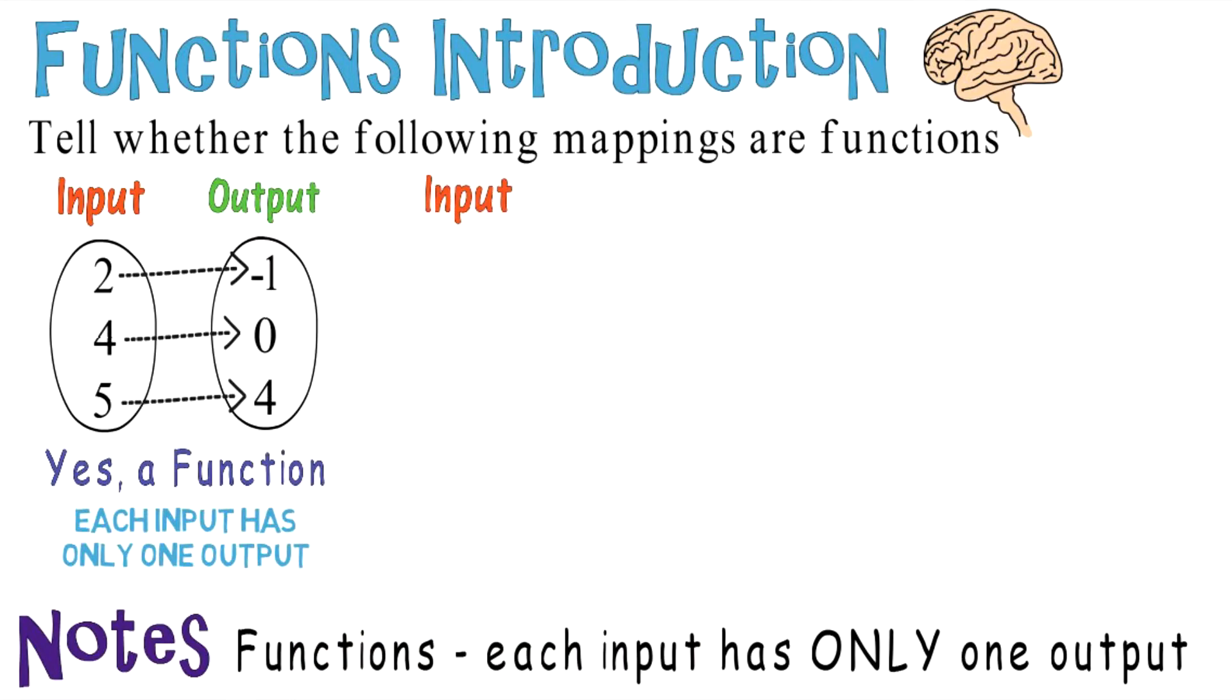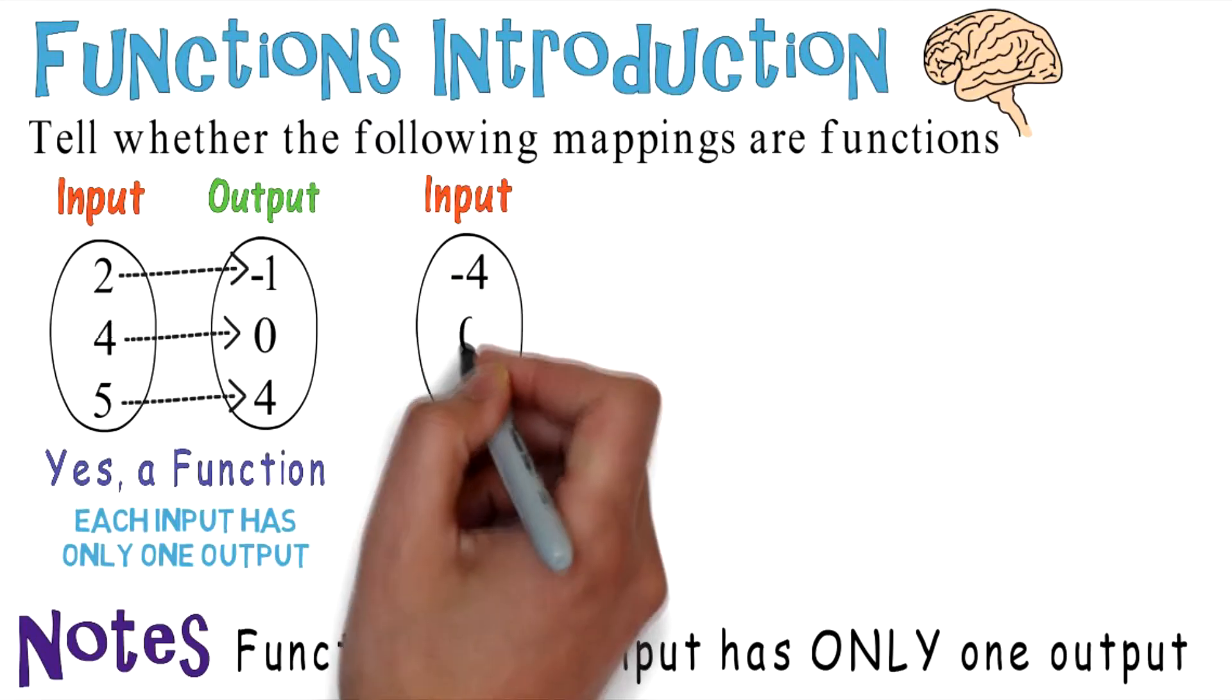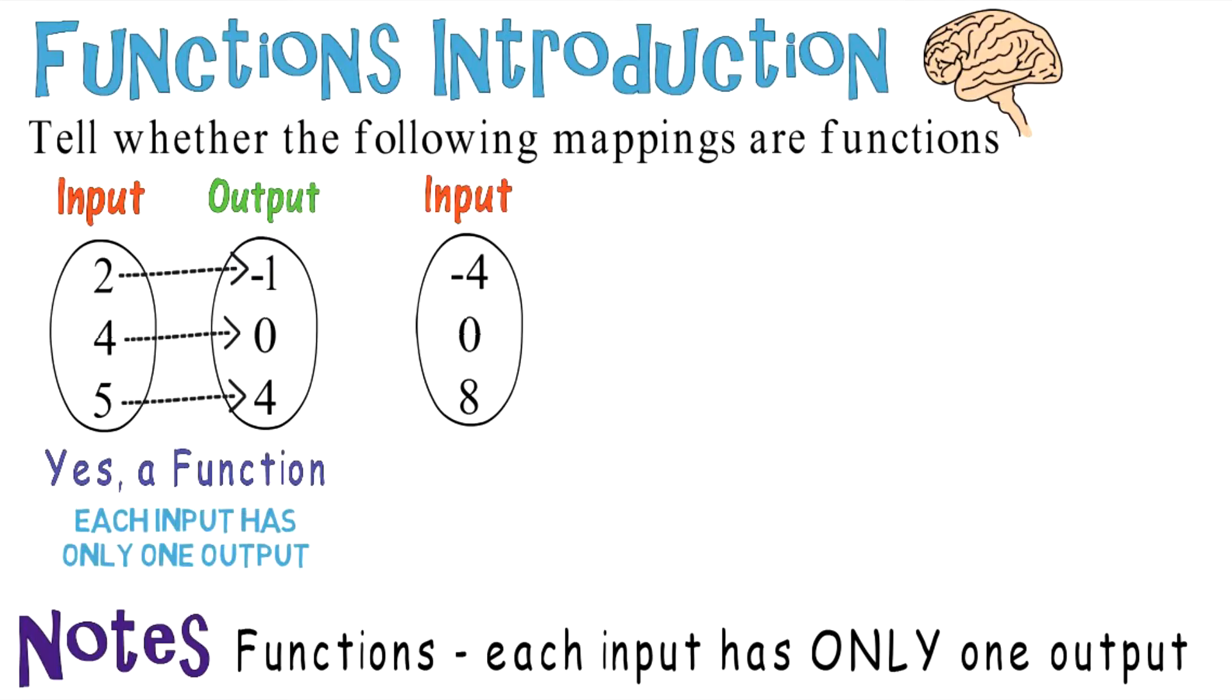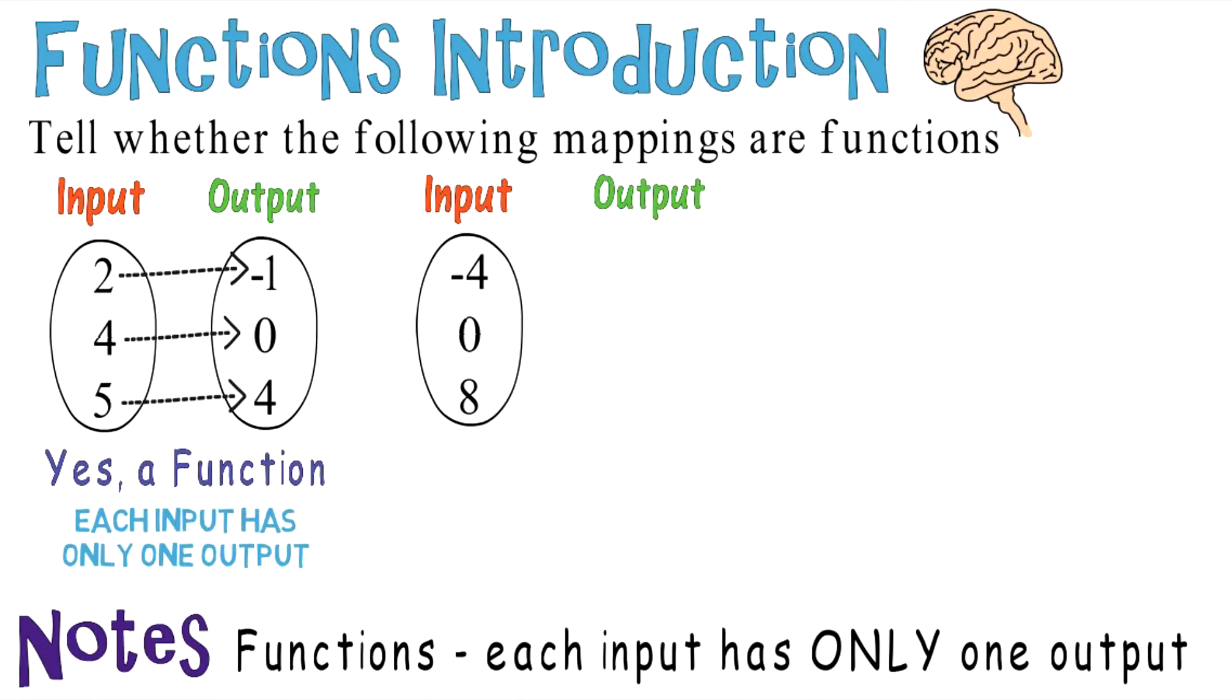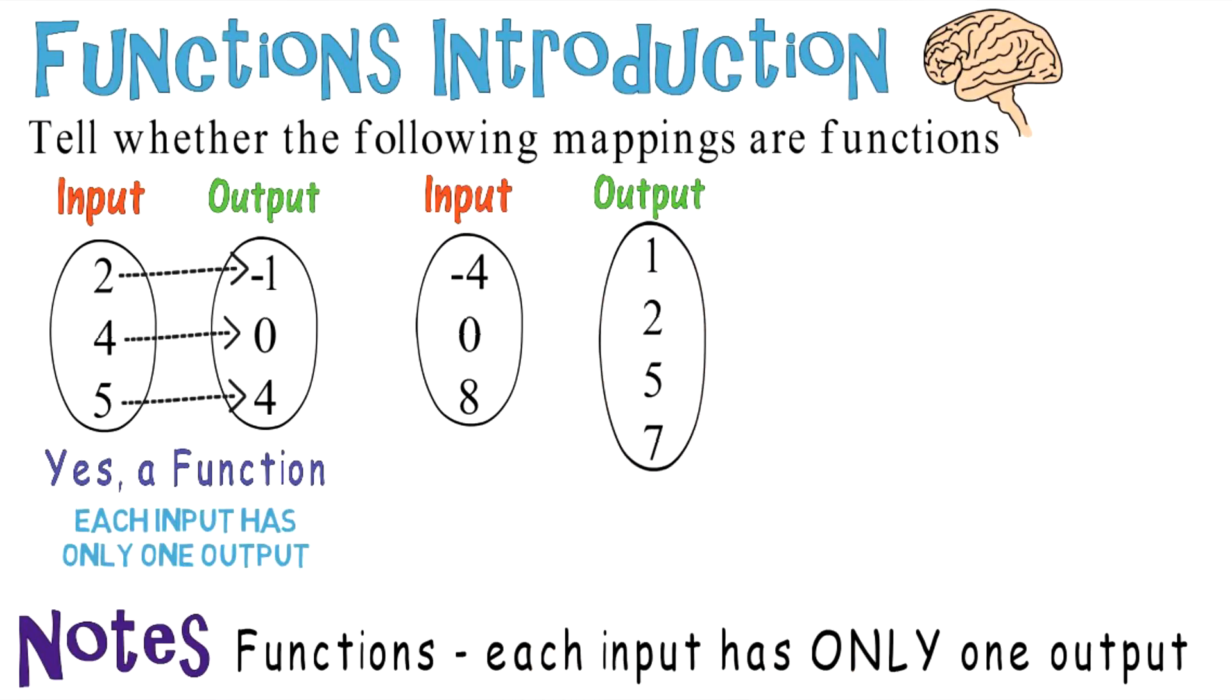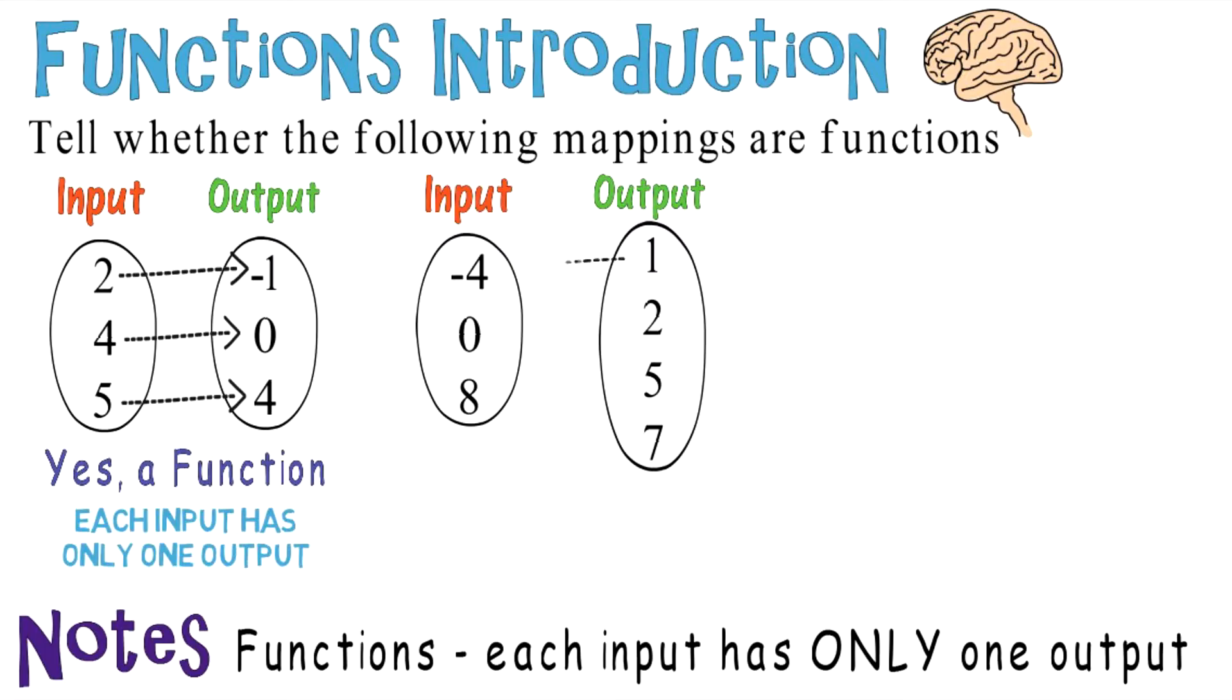Here's another example. You're given the following inputs: negative 4, 0, and 8. And the following outputs: 1, 2, 5, and 7. They are mapped accordingly.